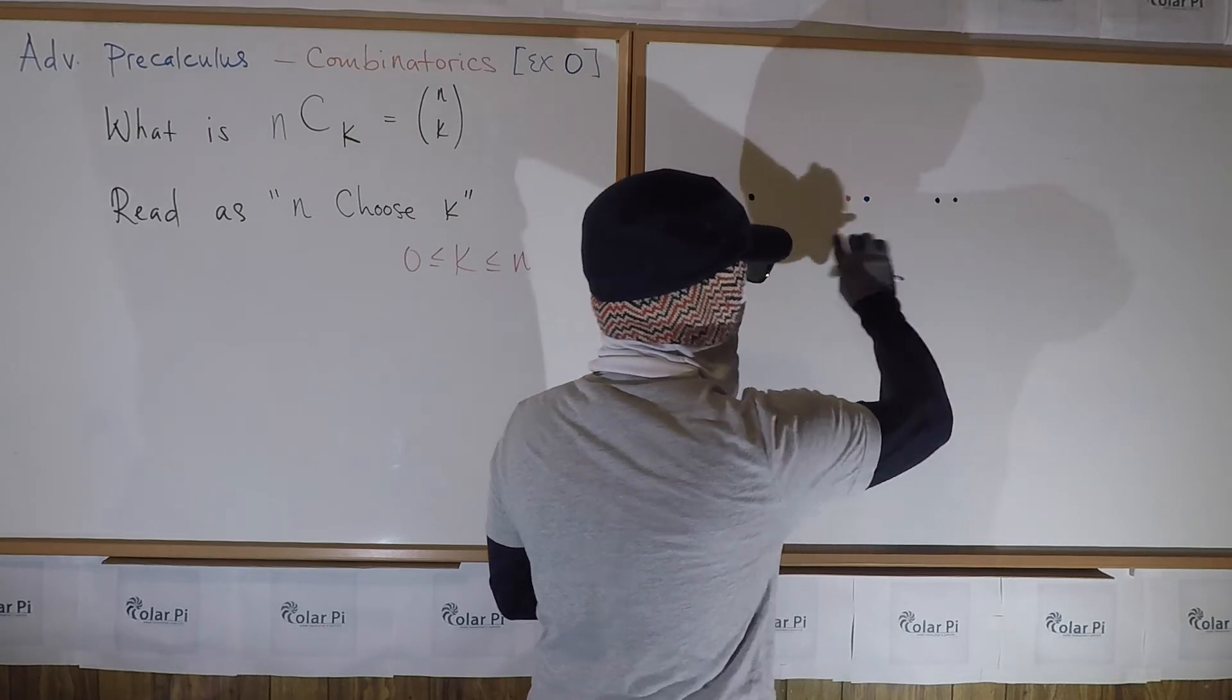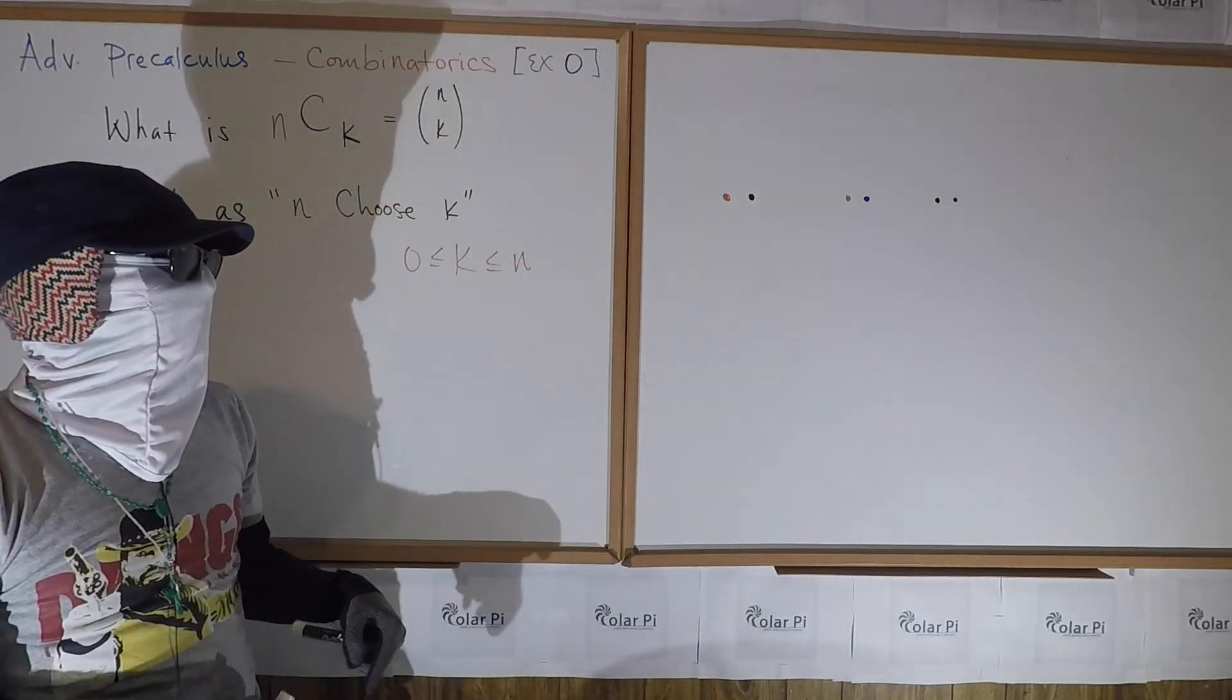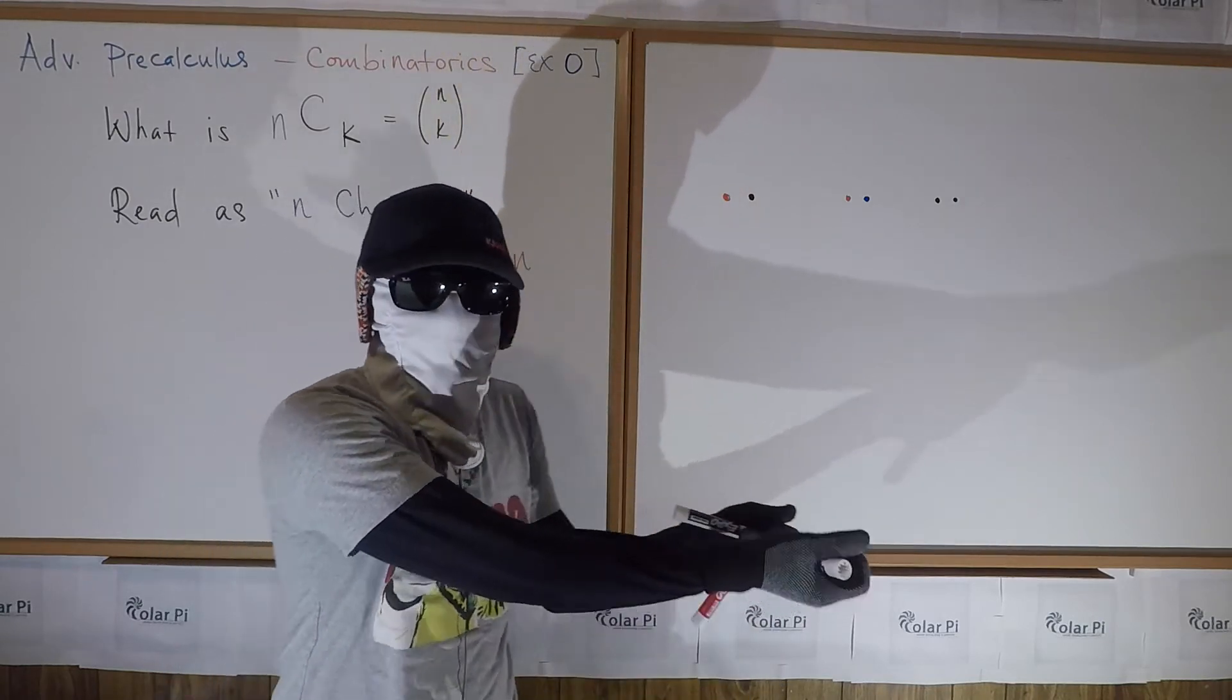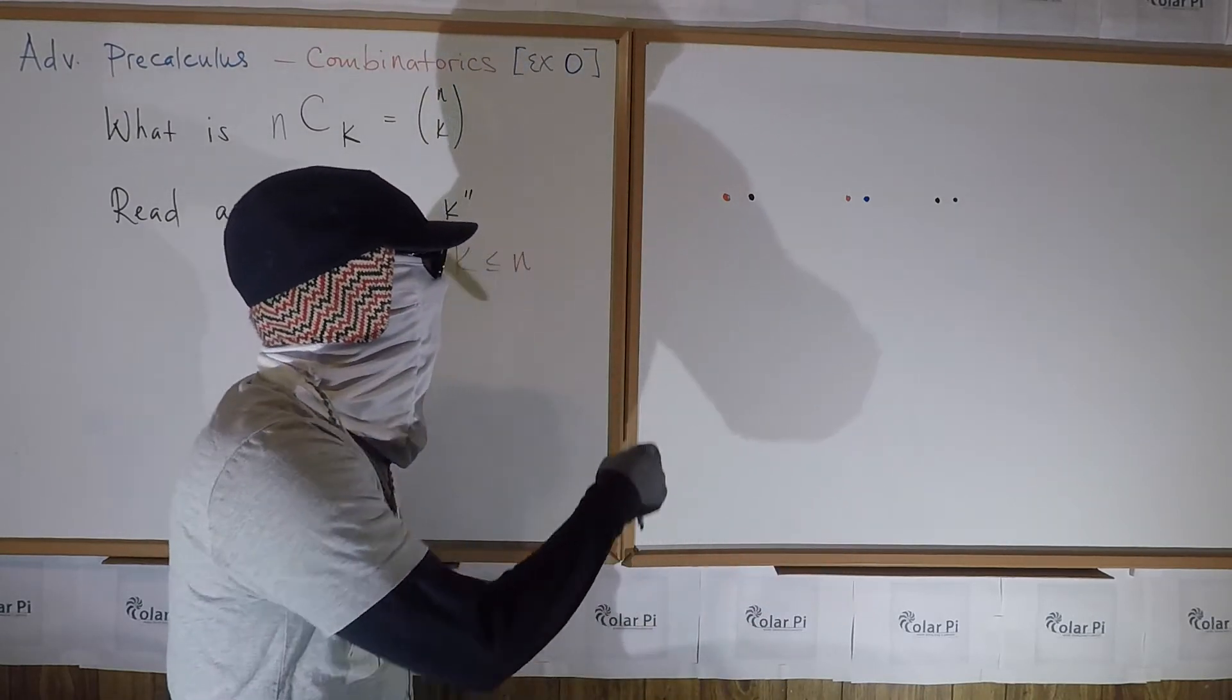And so you see that there are 3 ways to choose 2 at a time from 3 items. Notice the order doesn't matter - I didn't list blue marker and black marker as a new separate addition. Black marker and blue marker is the same as blue marker and black marker.